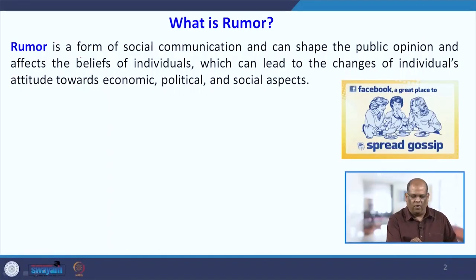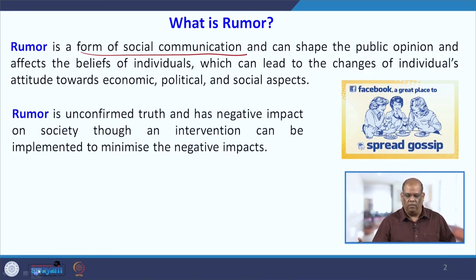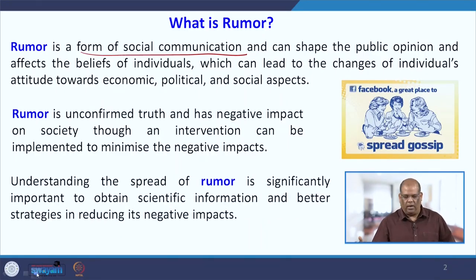What is a rumour? A rumour is a form of social communication and can shape public opinion and affects the belief of an individual, which can lead to changes in an individual's attitude towards economic, political and social aspects. A rumour is an unconfirmed truth and has a negative impact on society, though an intervention can be implemented to minimize the negative impacts. We will use a mathematical model to understand the spread of rumour and to figure out some strategies on how to reduce its negative impact on society.